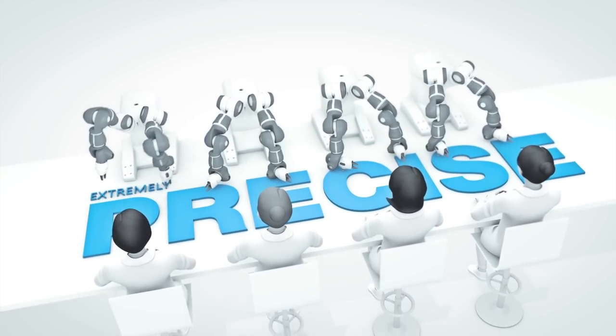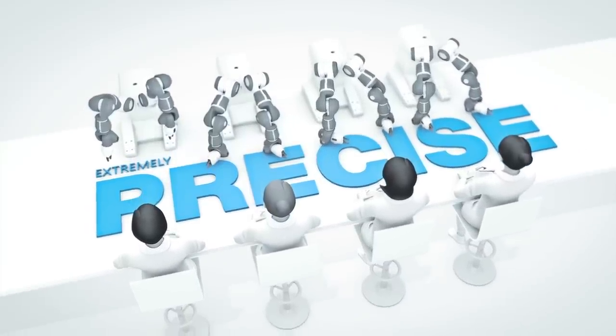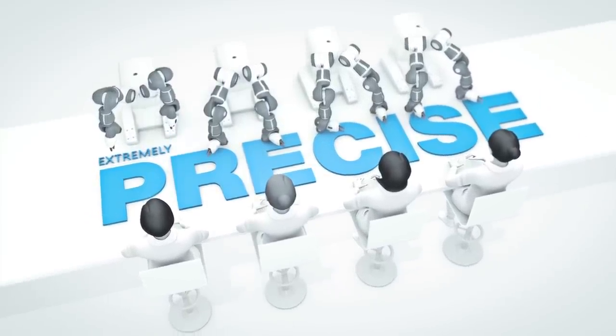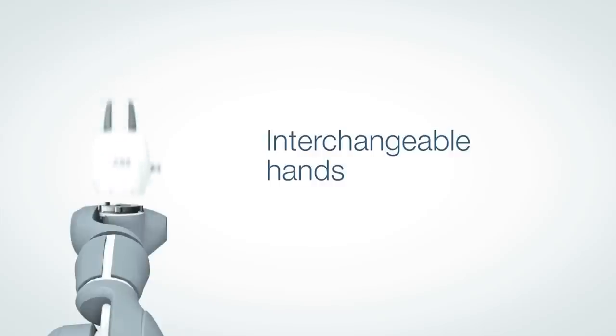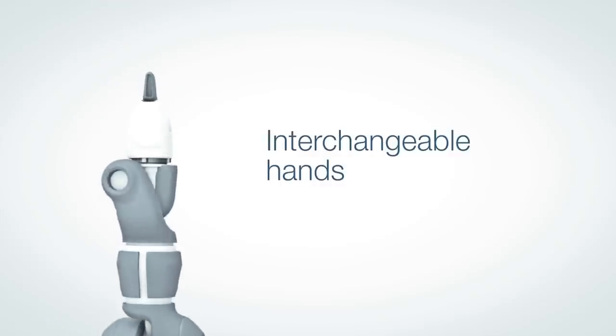It is this combination of agility and dexterity that allows YuMi to work on the same assembly lines as humans without skipping a beat. Thanks to its interchangeable hands, YuMi is able to perform a wide range of tasks.